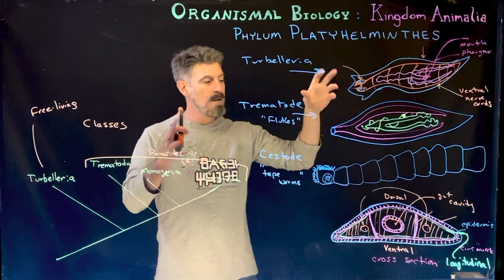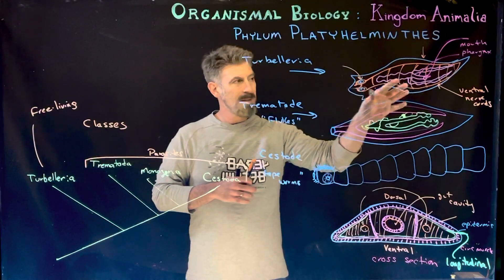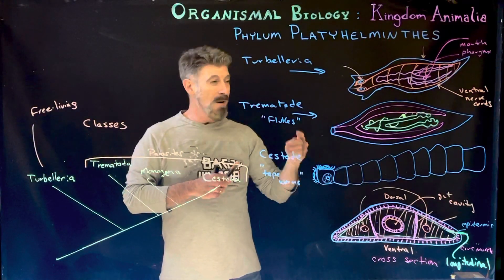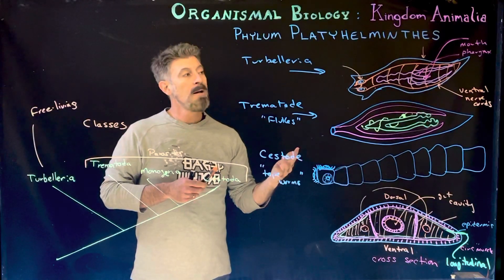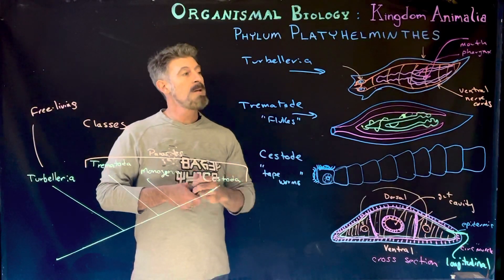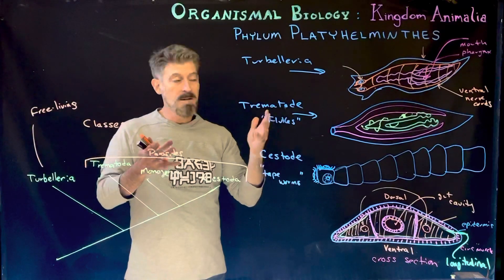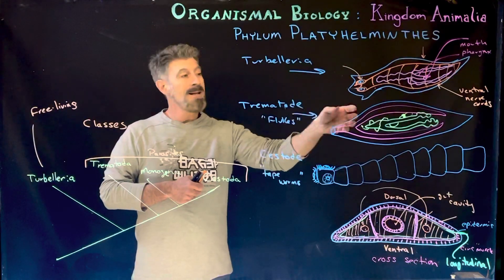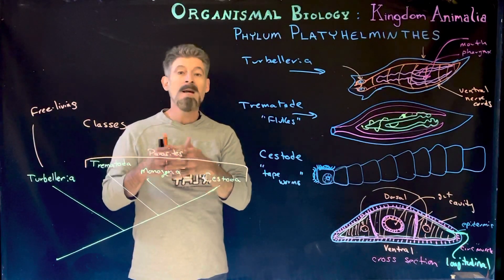The idealized model of tissues for a Platyhelminth that I discussed in the previous lecture was really the Turbellarian model. They are marine and freshwater species. One other noteworthy thing about the Turbellaria — not necessarily related to their ecology — is that they are very well known for their ability to regenerate. Many experiments are done with Turbellarians in labs to study regeneration.